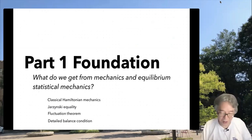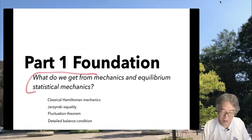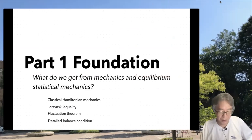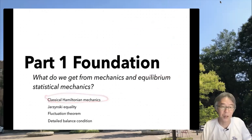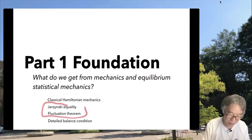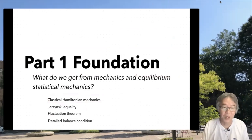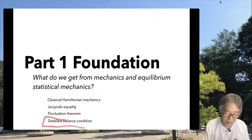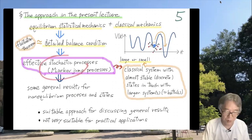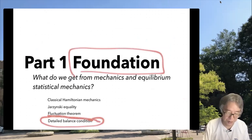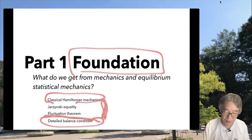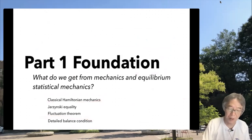Part 1 is called Foundation. Here we discuss what we get from mechanics and equilibrium statistical mechanics. We quickly review Hamiltonian mechanics, then discuss the Jarzynski equality and the fluctuation theorem, and derive the detailed balance condition for transitions between local minima. This part provides the foundation for the rest of the lecture.